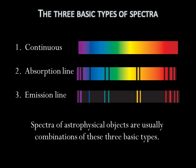There are three basic types of spectra. We'll talk about each one individually in a moment. The first is a continuous spectrum. It looks like a continuous rainbow. The second is an absorption line spectrum. It looks like a rainbow with dark lines on it. The third is an emission line spectrum. It has bright lines instead of dark lines. Spectra of astronomical objects are usually combinations of these three basic types.